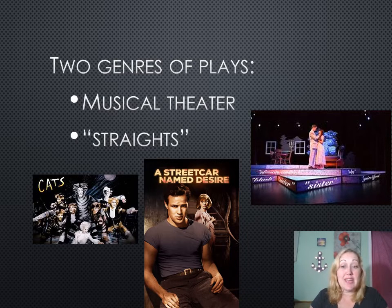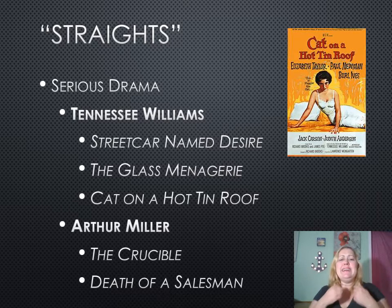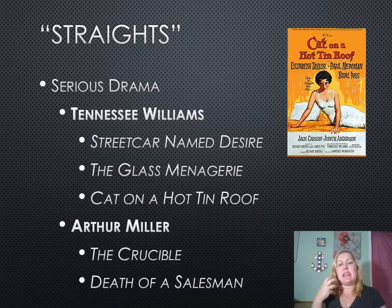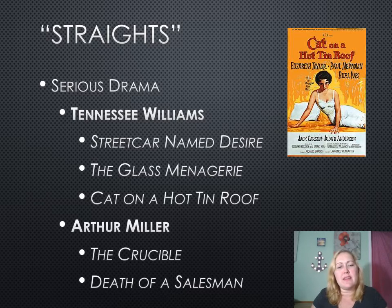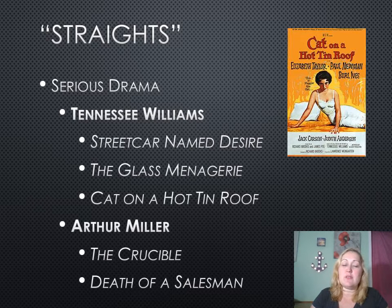And then there's also a type called straights — this is the type of modern theater that you've been reading in the textbook. Straights include Cat on a Hot Tin Roof by Tennessee Williams and A Streetcar Named Desire — 'Stella!' If you've never watched A Streetcar Named Desire, you must; it really reflects the emotional turmoil of society and its limitations. Cat on a Hot Tin Roof is also a great example. Arthur Miller wrote The Crucible and Death of a Salesman.